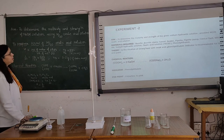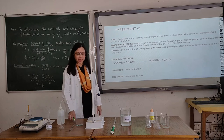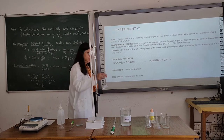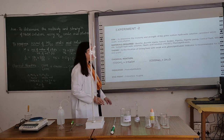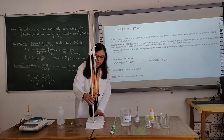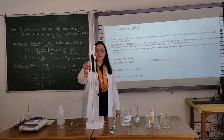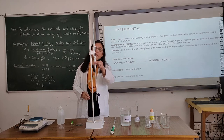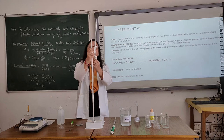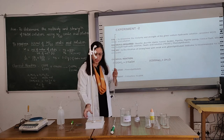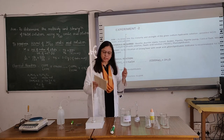The next experiment is to determine the molarity and strength of NaOH solution, provided N/20 oxalic acid solution. Now we will perform this experiment since we have prepared N/20 oxalic acid solution. Let us acquaint ourselves with the apparatus used during this volumetric analysis or titration. This is known as a burette. I am taking it out from the burette stand. This is the burette stand, and this is a white tile which is kept over the burette stand to have a clear view of the color change.